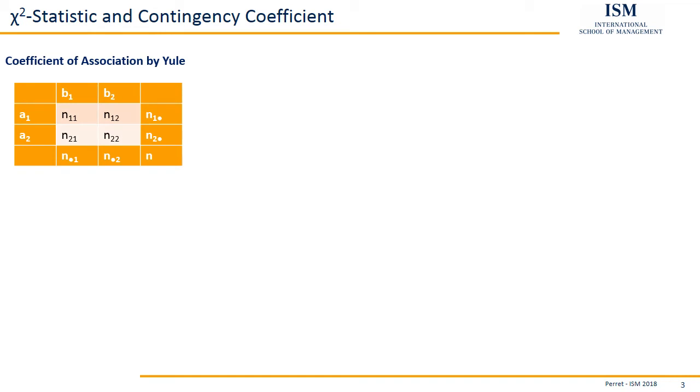This is, as seen here, a table which only has 4 entries: n11, n12, n21, and n22. And for those, the Yule coefficient is calculated as follows.